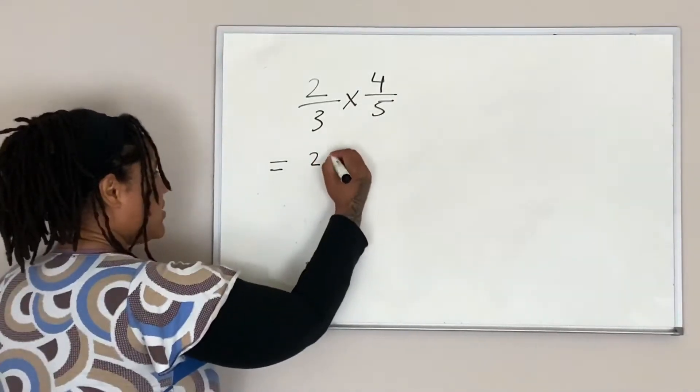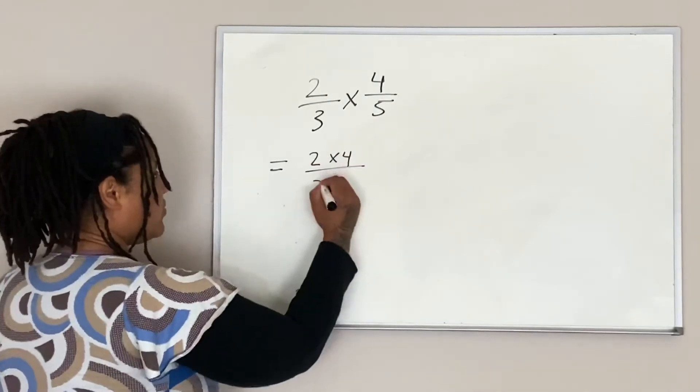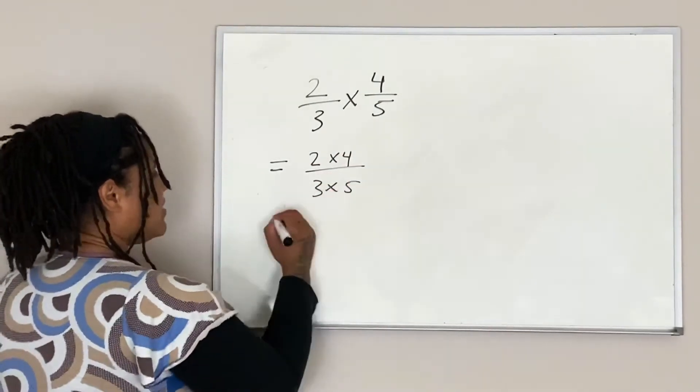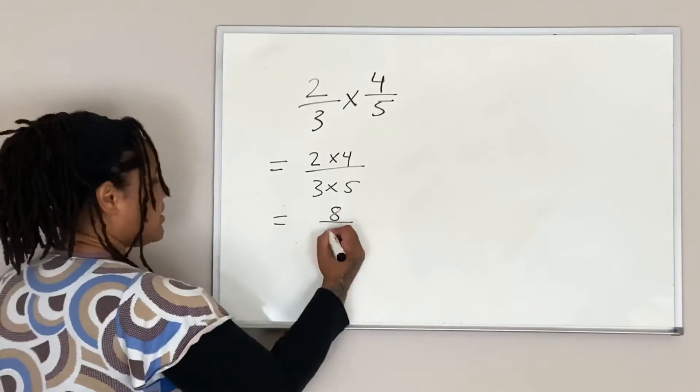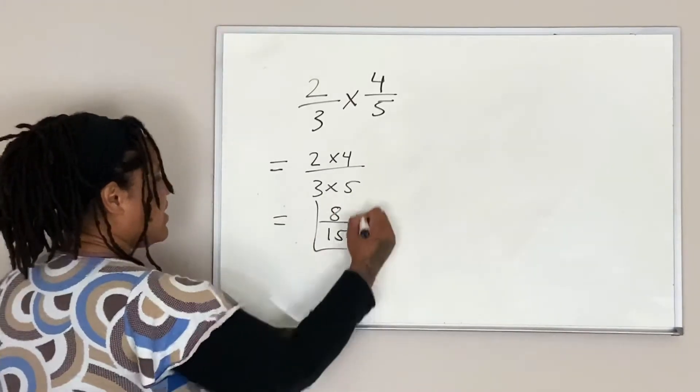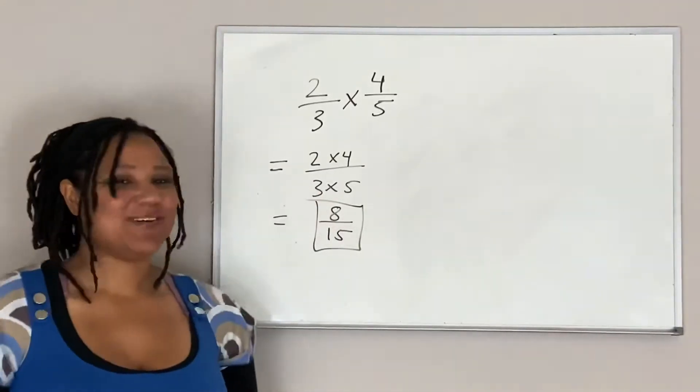So we have 2 times 4 all over 3 times 5, and 2 times 4 is 8, and 3 times 5 is 15. So that is how you multiply fractions.